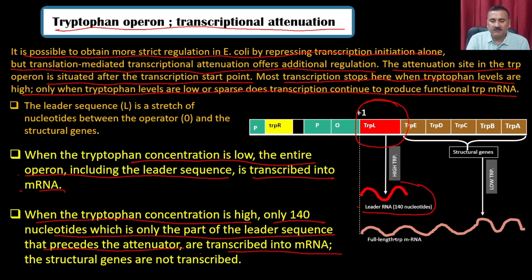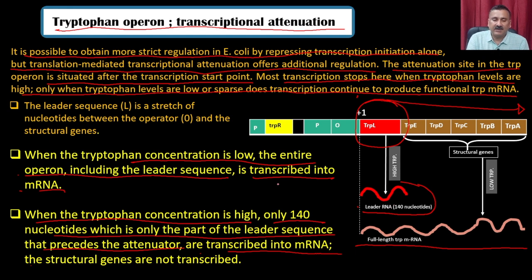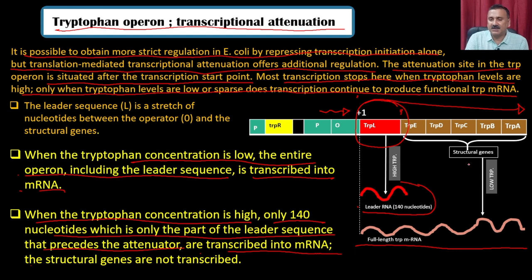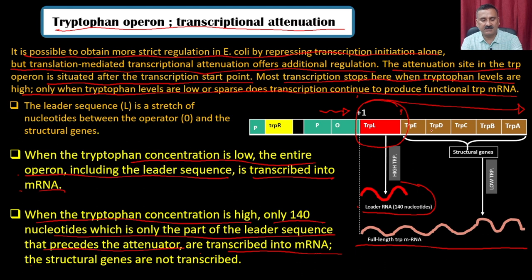When tryptophan levels are low, transcription starts and continues all the way to the end, producing a full-length messenger RNA containing both the leader sequences and the structural gene RNA sequences. When tryptophan levels are very high, transcription starts but ends early, producing only the 140-nucleotide leader sequence — stopping transcription of the structural genes. This unique phenomenon occurring only in the tryptophan operon is called transcriptional attenuation.